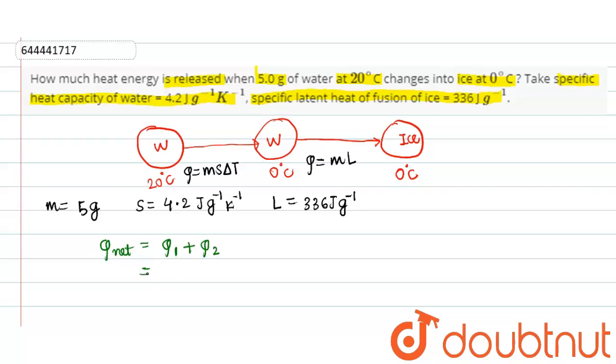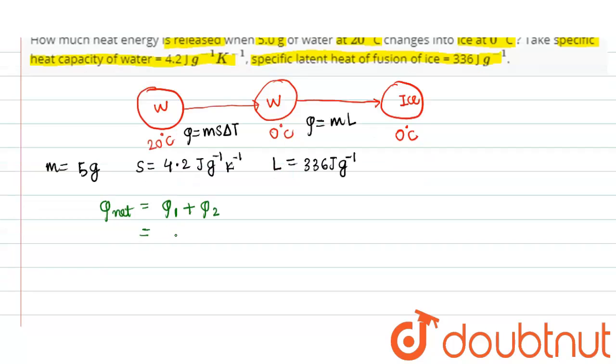Friends, Q1 here equals m, that is 5, into S, that is 4.2, into delta T, that is 20, plus Q2 is m into L, and L is given as 336.